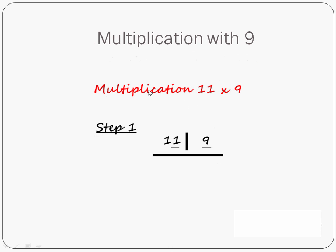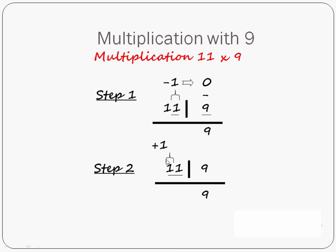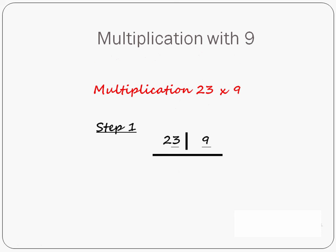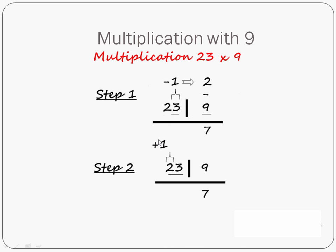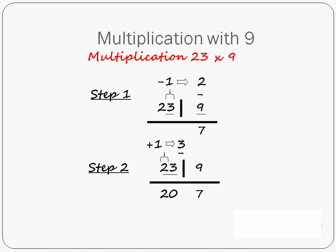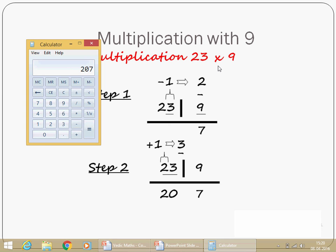Now for multiplication by a single 9, the same rule applies. Since 9 is 1 digit, take 1 digit of the number and subtract 1. For 11 × 9: take last digit 1, subtract 1 = 0. Subtract 0 from 9 = 9. Last part: 9. Remaining digit: 1, add 1 = 2. Subtract 2 from 11 = 9. Answer: 99. And 11 × 9 = 99 — correct. For 23 × 9: take last digit 3, subtract 1 = 2. Subtract 2 from 9 = 7. Last part: 7. Remaining digit: 2, add 1 = 3. Subtract 3 from 23 = 20. Answer: 207.